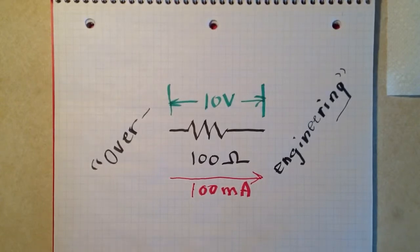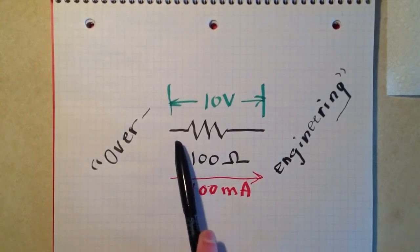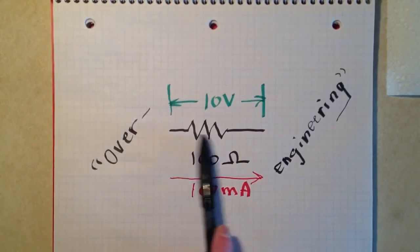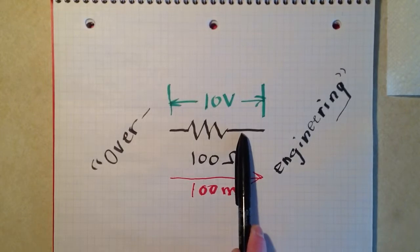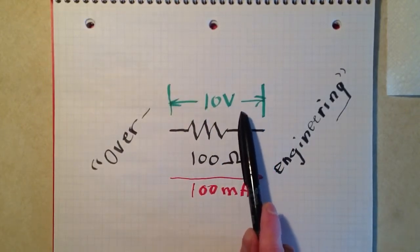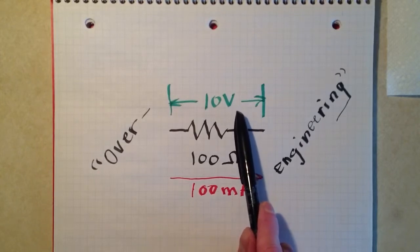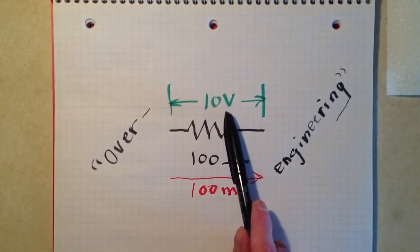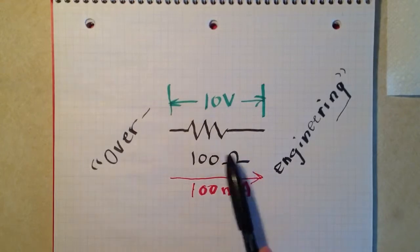In the example in that video, I showed a 100 ohm resistor. If you place 10 volts across that resistor, then the power that resistor is called upon to dissipate is the voltage squared divided by the resistance, or 100 over 100, or 1 watt.